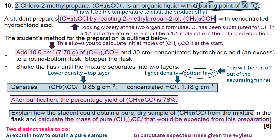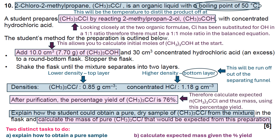Finally, it says that after purification the percentage yield of (CH₃)₃CCl is 76%. So you have to calculate the expected moles of that compound and from that its mass, using this percentage yield.